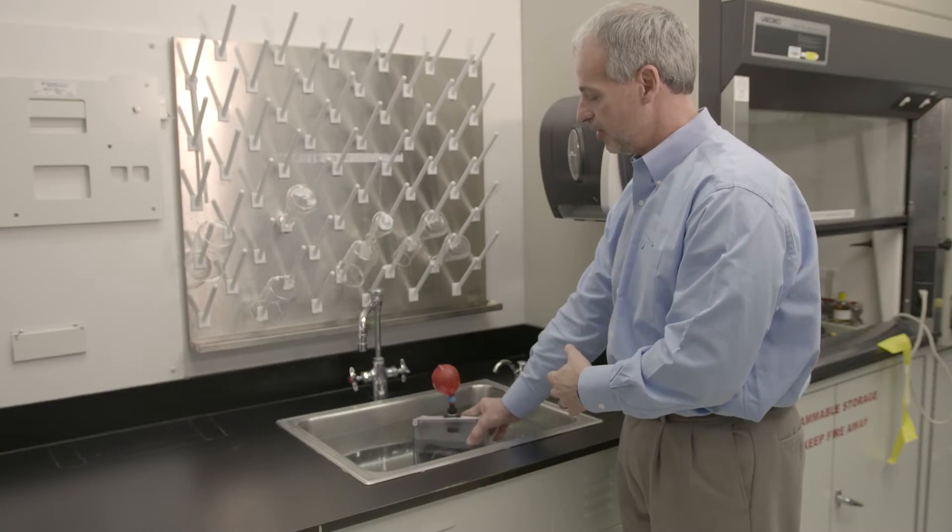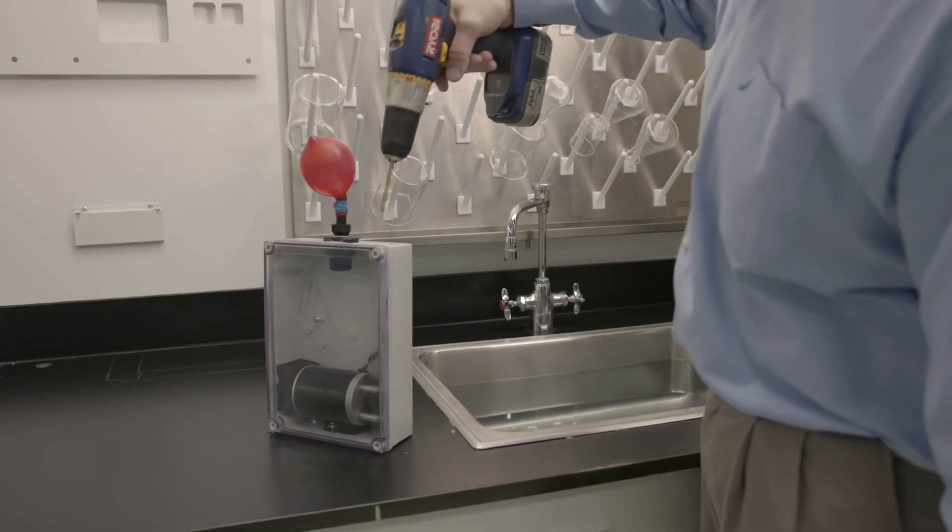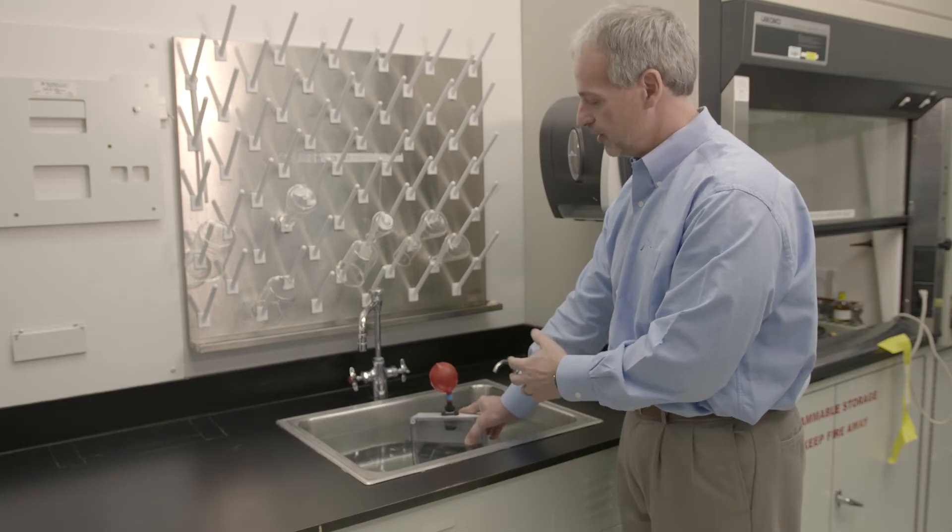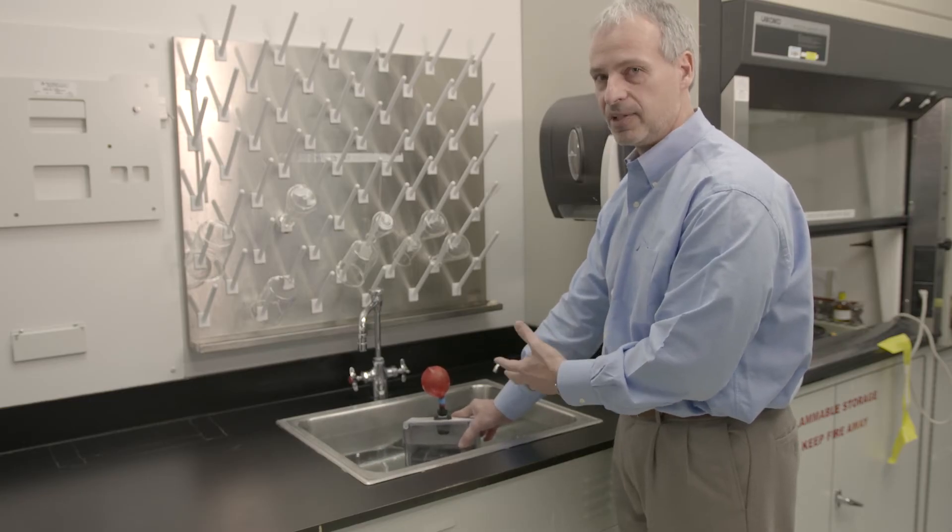We're going to take the enclosure out of the water, drill a small hole in the top, and put one of the Porex protection vents on the unit to show what happens when a unit is properly vented.